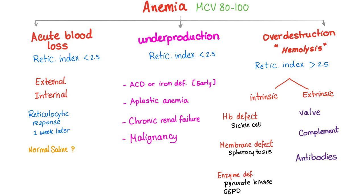By over-destruction, I mean hemolysis. Hemolysis can have different causes — intrinsic versus extrinsic. Mechanisms of hemolysis are a completely different animal; mechanisms include intravascular versus extravascular. Intrinsic versus extrinsic refers to whether the defect is inside or outside the red blood cell. Intravascular versus extravascular refers to where the hemolysis occurs: in the blood vessel or in the spleen. Hemolysis will have a reticulocyte index more than 2.5, because the bone marrow responds by producing more blood cells. Reticulocytes are the baby RBCs.